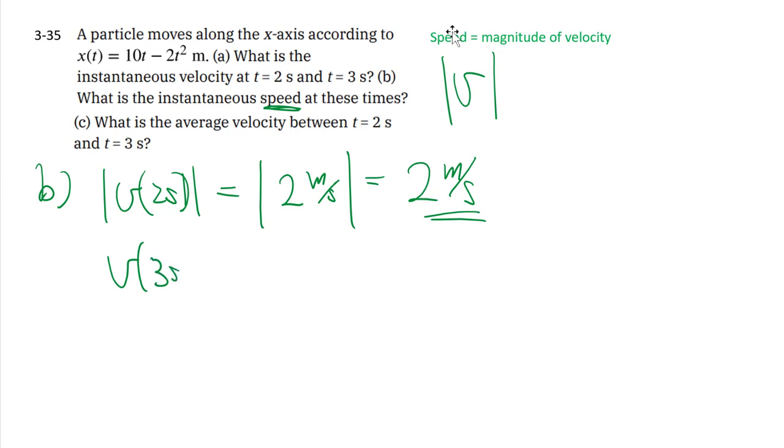At three seconds, we worked out from part A that was negative two meter per second. So if you take the absolute value of that, it also is two meter per second. So speed just refers to the magnitude, and so we basically drop the sign.